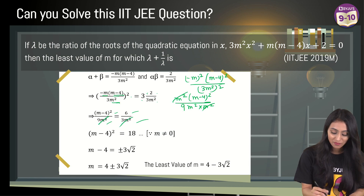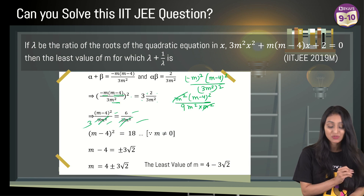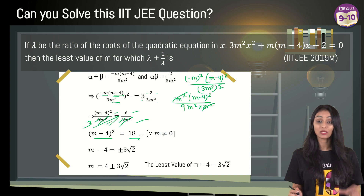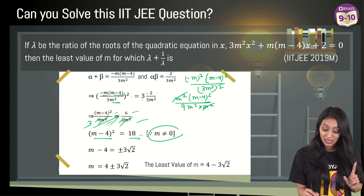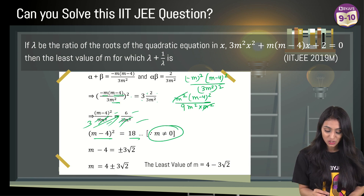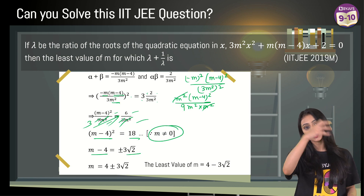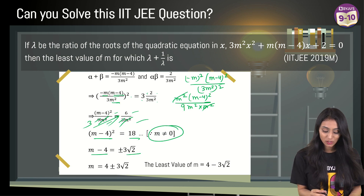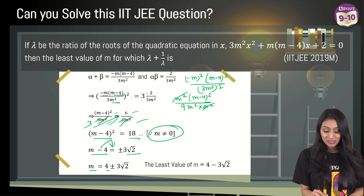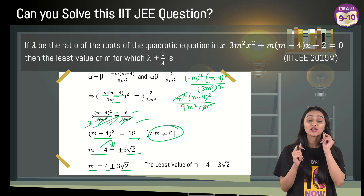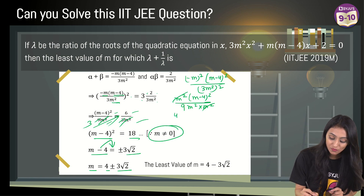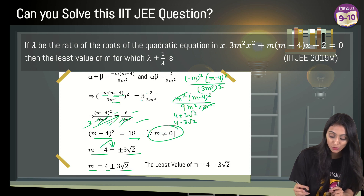Cross-multiplying gives (m − 4)² = 18. Taking the square root: m − 4 = ±3√2, so m = 4 ± 3√2. Since m ≠ 0, both values are valid. The two values are 4 + 3√2 and 4 − 3√2. The question asks for the least value of m, so we take 4 − 3√2.